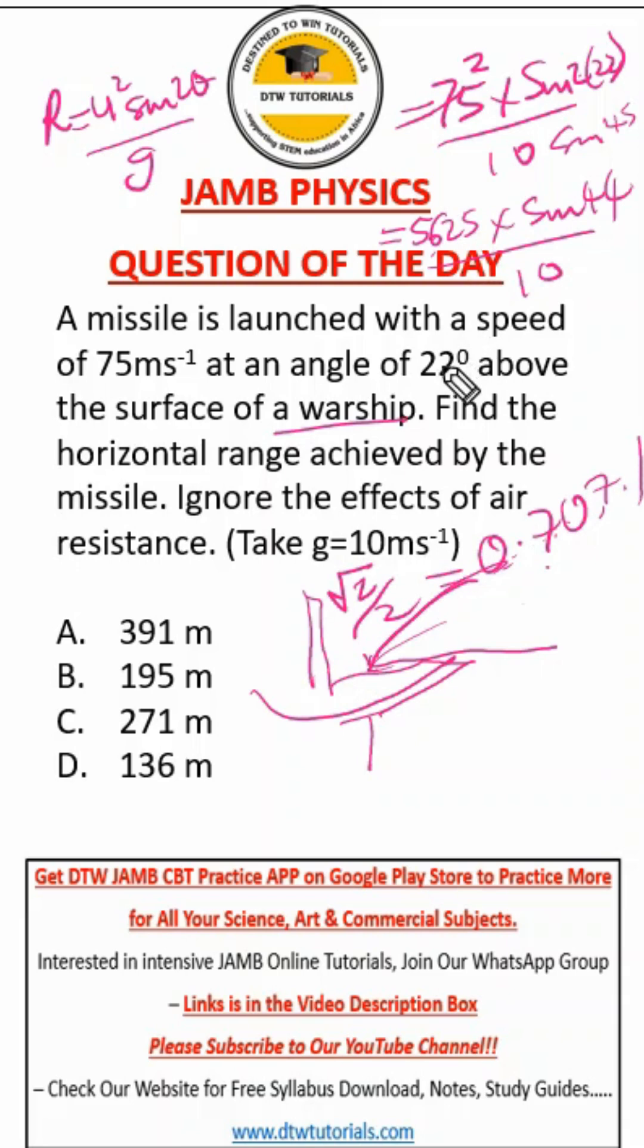If I use 0.7071 times 5625 divided by 10 using my JAMB calculator, because JAMB has a calculator feature, you can do these simple things on your JAMB calculator. When I do this, I'm going to get 397 point something.